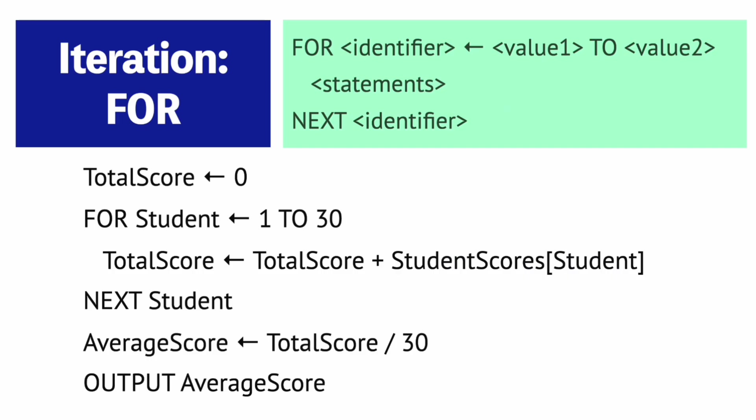Here's another example. In this scenario, the program has an array called student scores containing the scores of 30 students. The program accesses each of the indexes one at a time, and the scores are totaled up in the loop. After the loop ends, the average score is found by dividing the total score by 30, and then the average score is outputted.